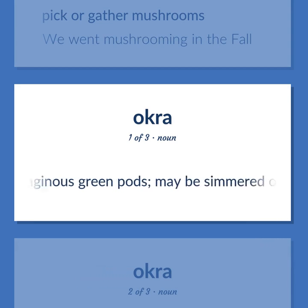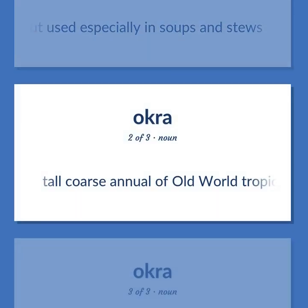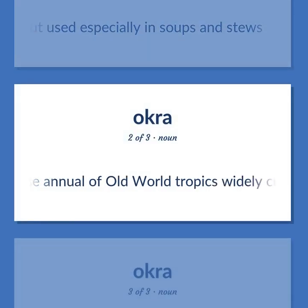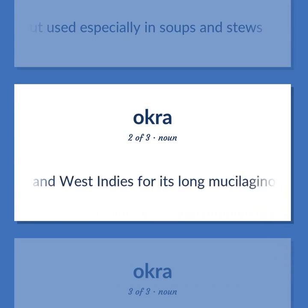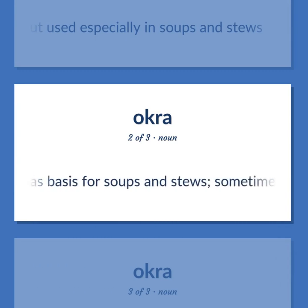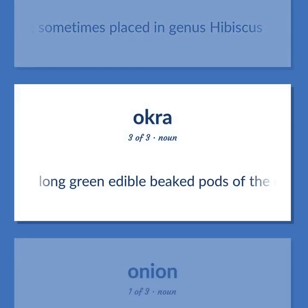Okra: Long mucilaginous green pods, may be simmered or sautéed but used especially in soups and stews. A tall coarse annual of Old World Tropics, widely cultivated in the southern United States and West Indies for its long mucilaginous green pods used as a basis for soups and stews, sometimes placed in genus Hibiscus. Also refers to the long green edible beaked pods of the okra plant.